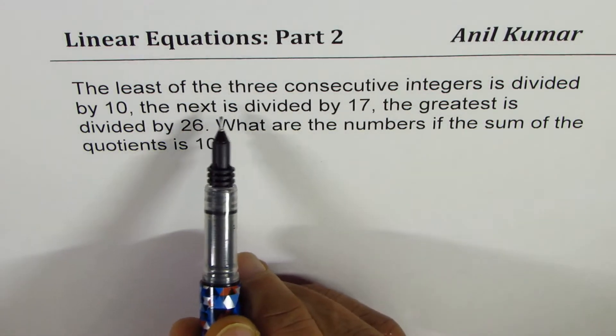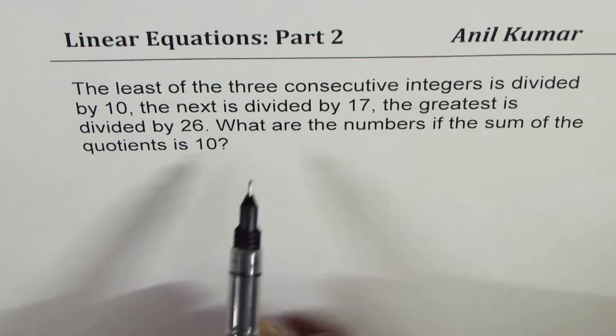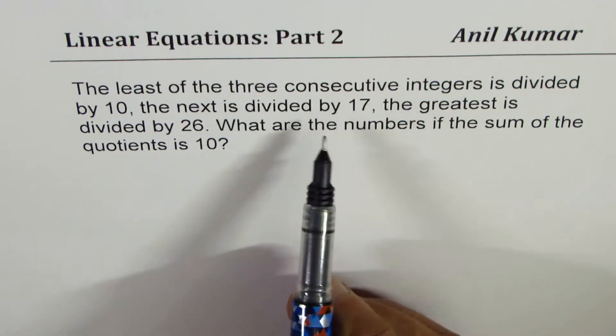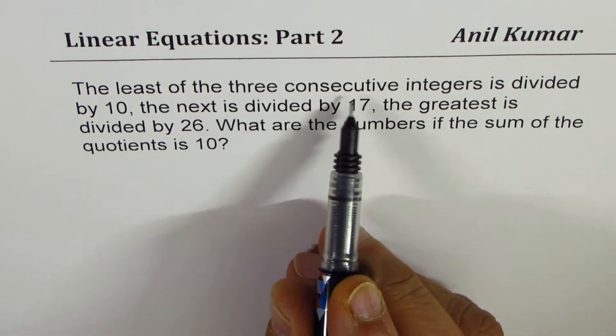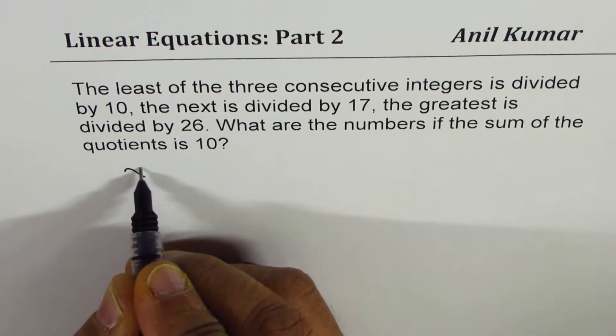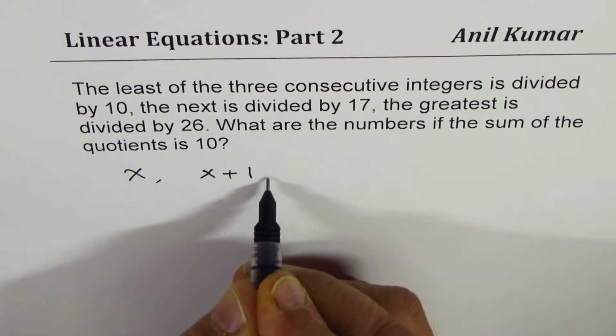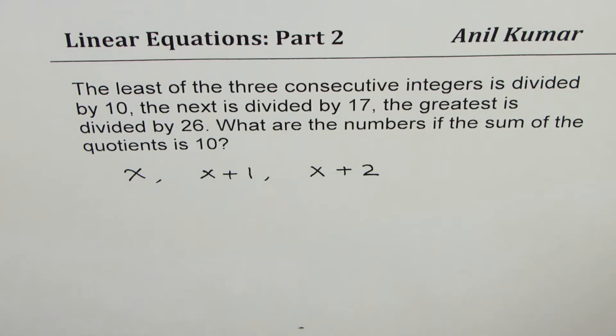Let's try to understand what it really means by saying three consecutive integers. Three consecutive integers means the integers which come one after the other, for example, 2, 3, 4. So when we are defining variables, we could say let the integers be x, then the next one will be x plus 1, and then we could write x plus 2. So that becomes three consecutive integers.